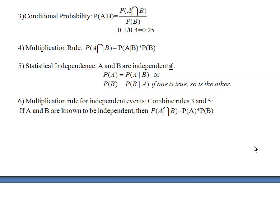Welcome to part D in our introduction to probability. We just got done learning the basic idea of what statistical independence is. Statistical independence says that the probability that A happens is the same whether or not we know B happens.